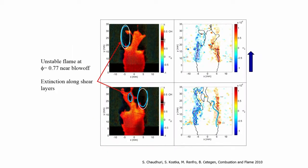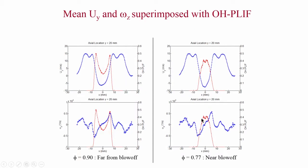These are single images, so we need statistics to establish a mechanism. Looking at the statistics: far from blow-off this is the PDF, near blow-off this is the PDF — red is for OH on the right-hand axis, blue is for velocity on the left-hand axis. The OH has a bimodal peak, which corresponds to maximum vorticity, meaning statistically the maximum OH is located inside the shear layers.